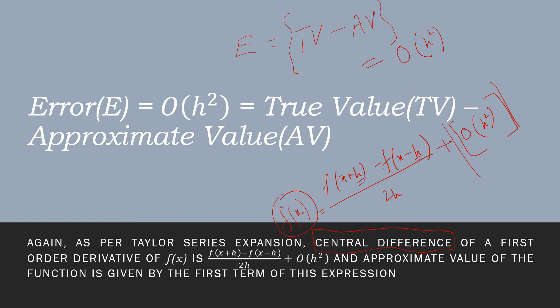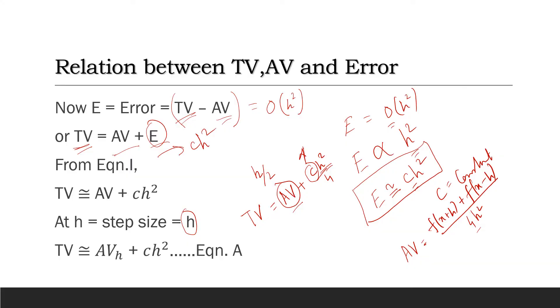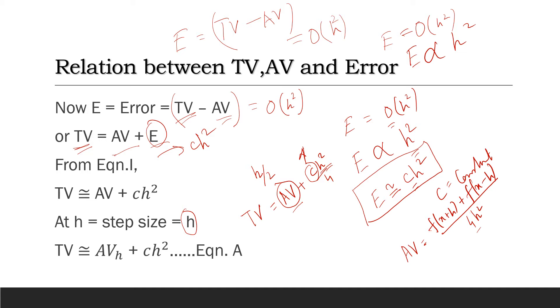Here, what happens is we try to approximate the solution in case of discretization. But in case of differentiation, we directly find the solution to a partial differential equation. The error E is equal to the true value minus the approximate value, which equals all other higher order terms in step size squared. So E is directly proportional to step size squared.